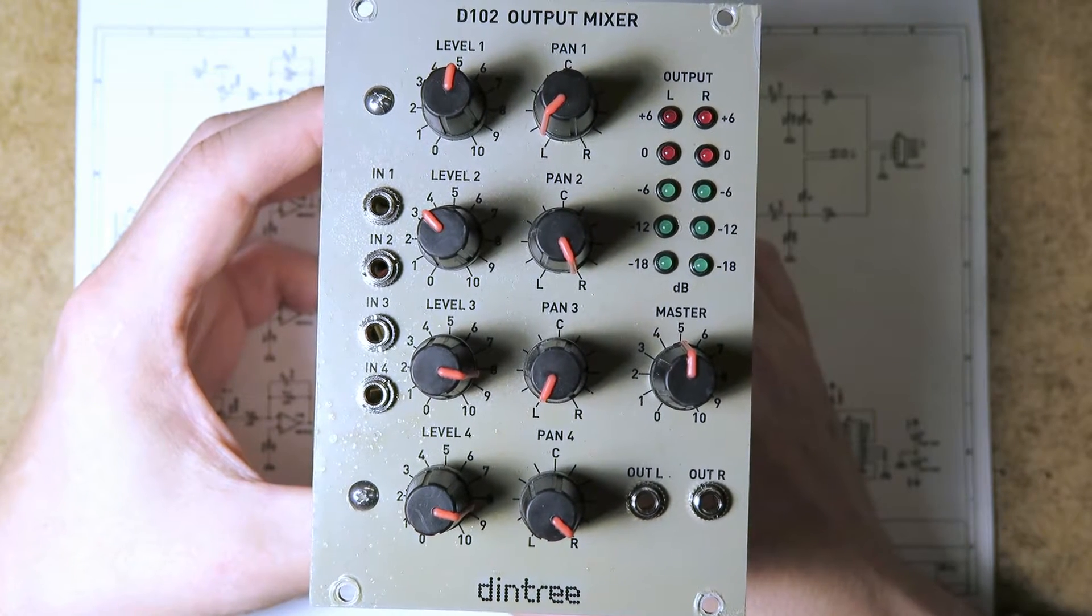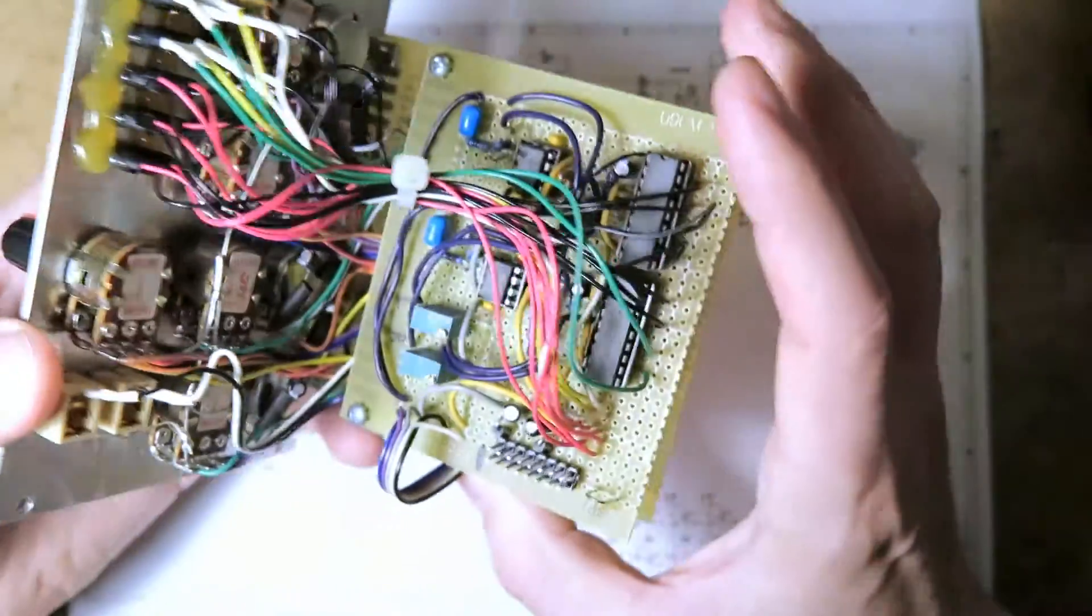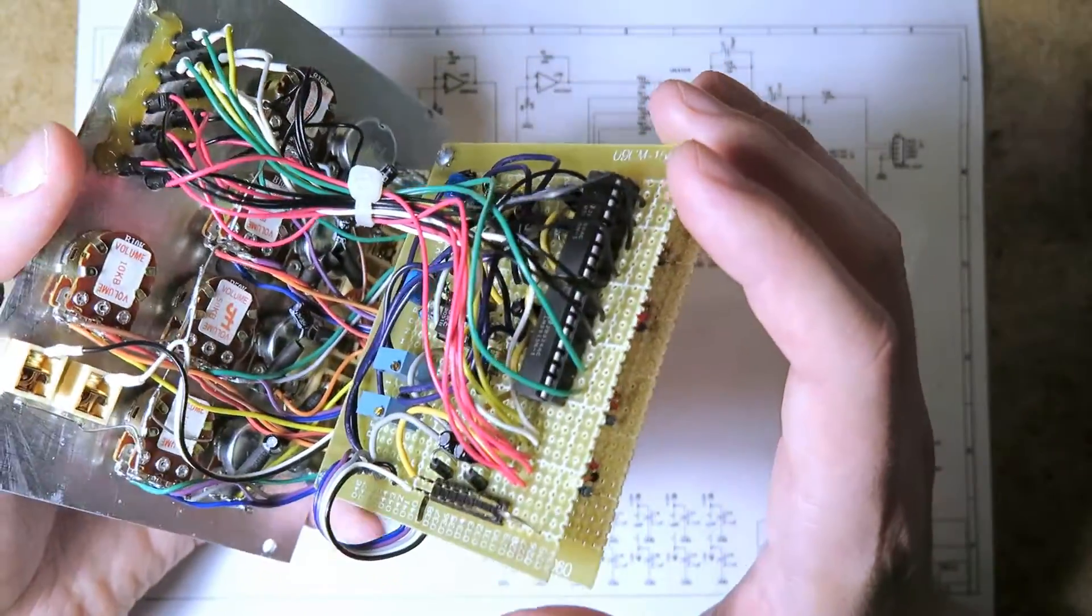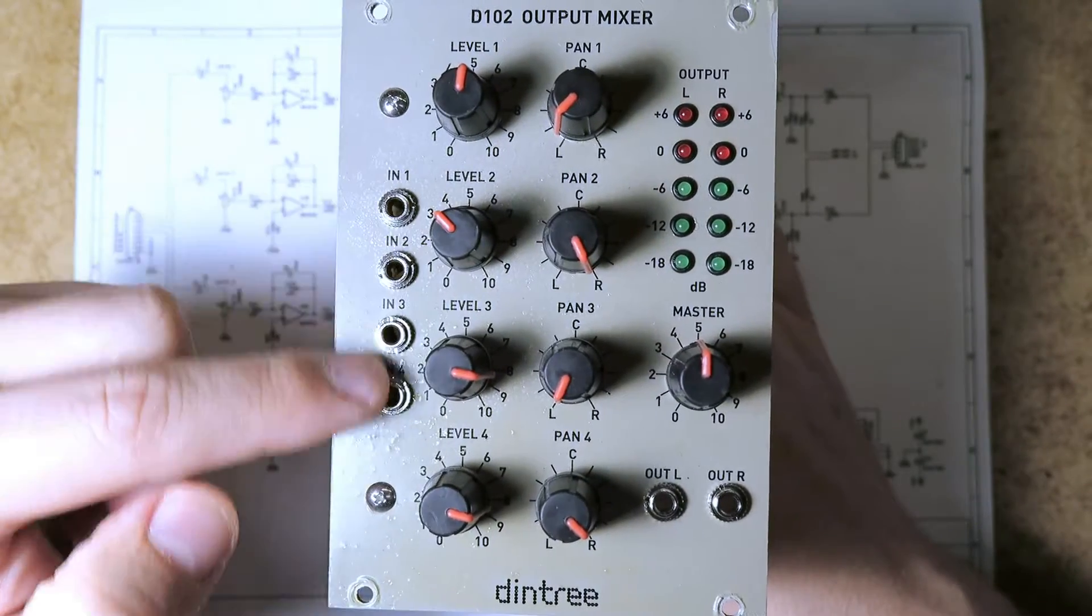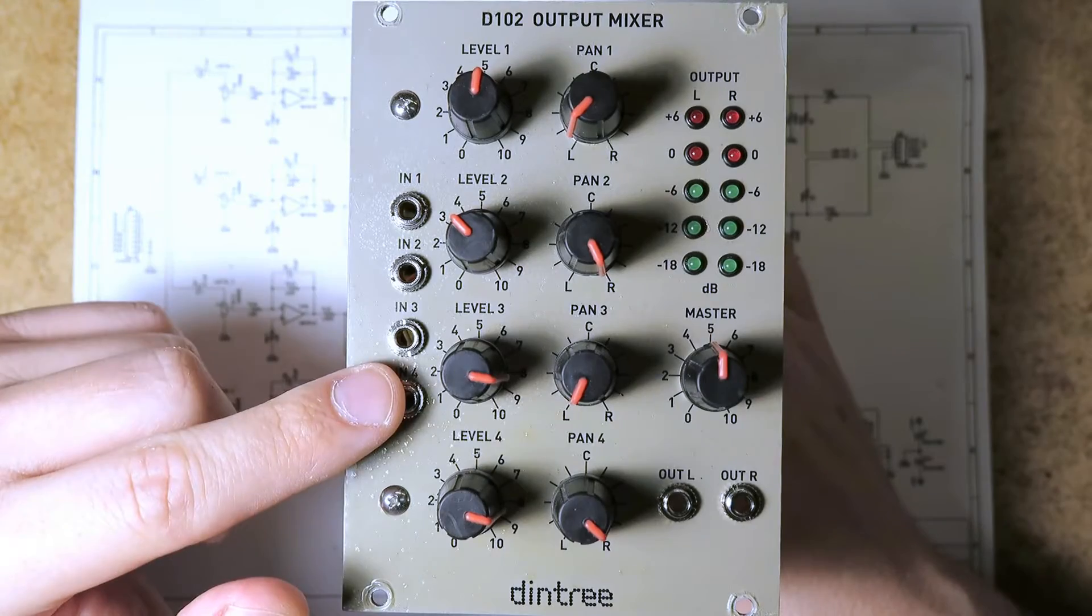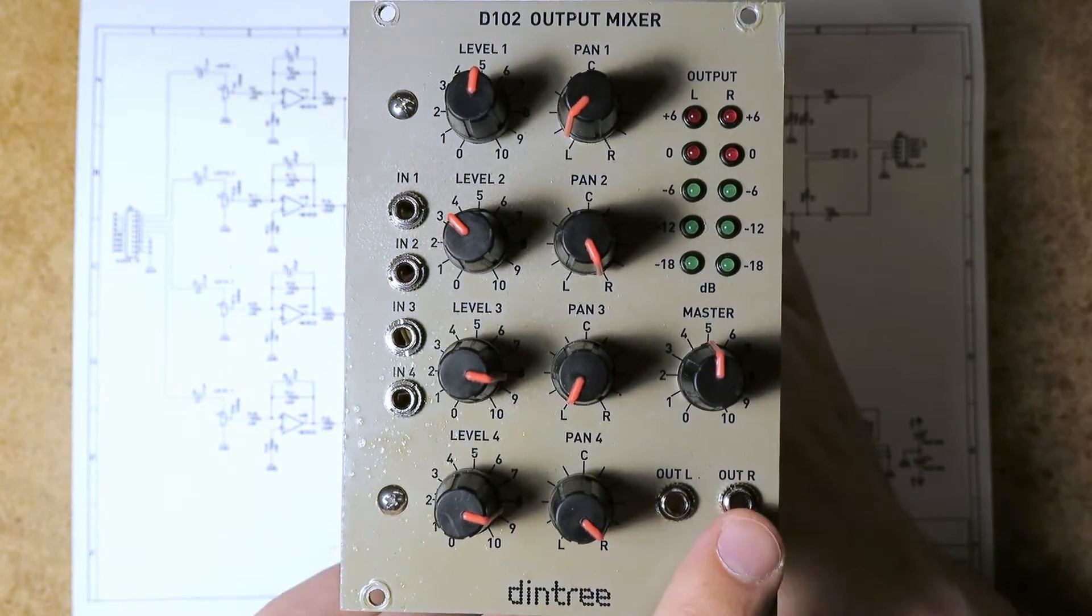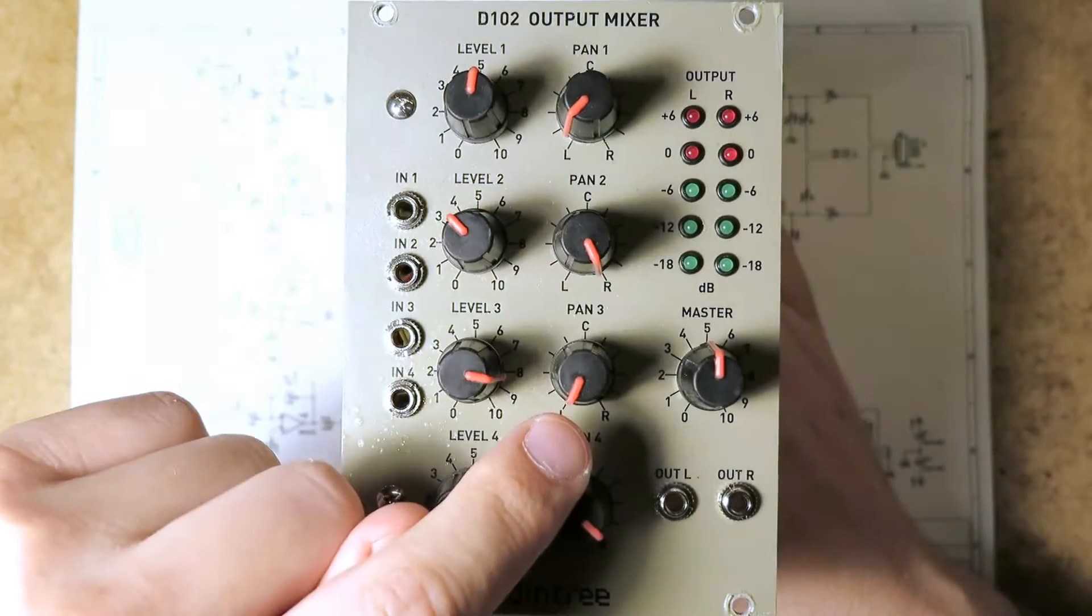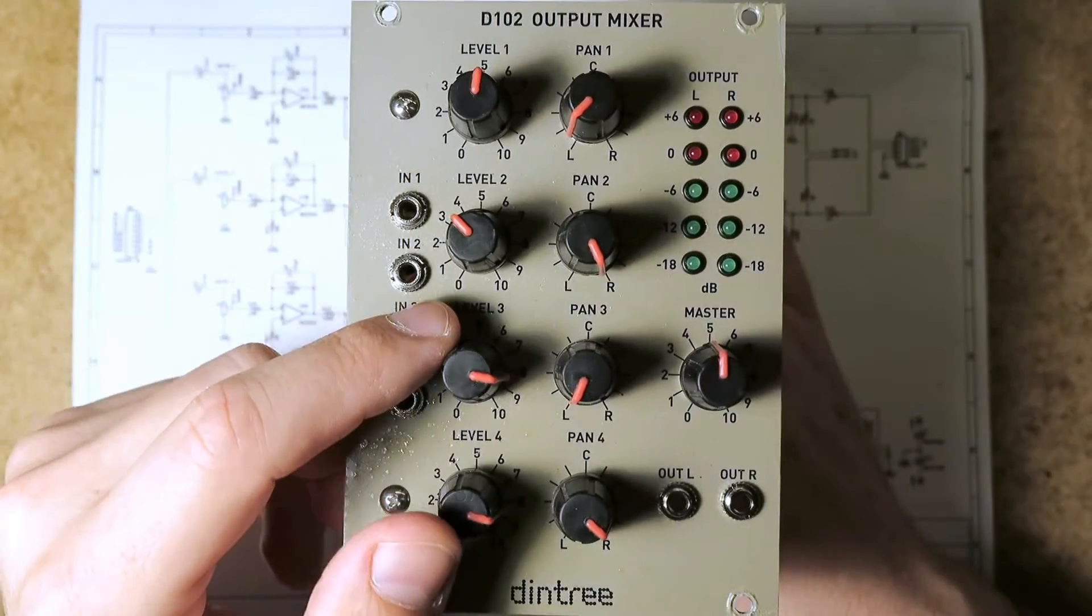If you go to dintree.com you can download the schematics and find out more details about it. But essentially it's all built on protoboard. This was a one-off design, it only took me a couple of days to put it together. Basically it's a four input mixer, this takes the 10 volt peak to peak signal from the Eurorack from the output of a VCA or an oscillator or whatever, and outputs a stereo signal. Each channel has a volume control and a pan control and there's a little output level meter over here.